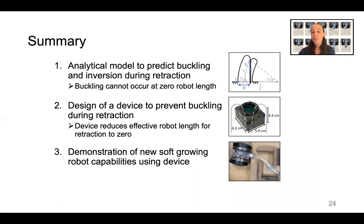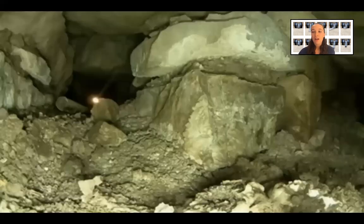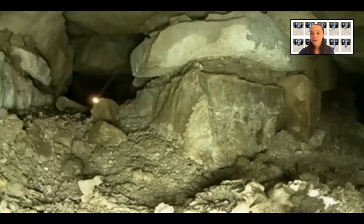Finally, we demonstrated several new soft-growing robot capabilities using this device. Overall, controlled motion and force during retraction make soft-growing robots more usable and practical. So, next time you want to operate a camera-equipped robot to explore a small space, consider using a soft-growing robot equipped with a retraction device. It just might do the trick, or at least it will allow you to explore both directions in a forking path.